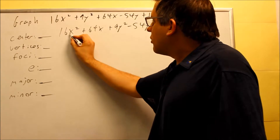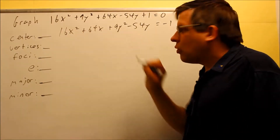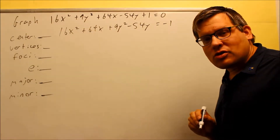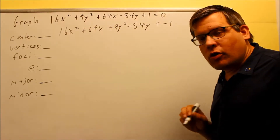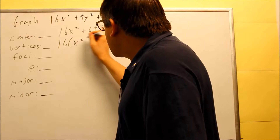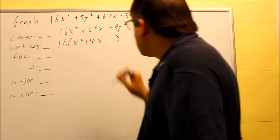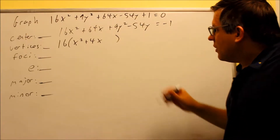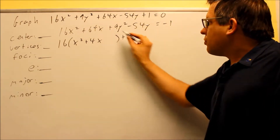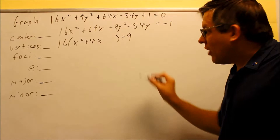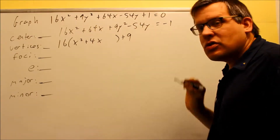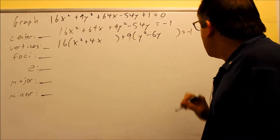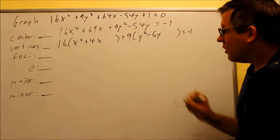Next, I want to factor out the number in front of the x squared and the y squared — we're going to factor by grouping each one separately. I want a 1 in front of the x squared for complete the square, so I pull out a 16 and get x squared plus 4x, leaving a space because I'll be adding a number inside. Then I pull out the 9 from the y terms and get y squared minus 6y, again leaving a space for the number I'll add inside.